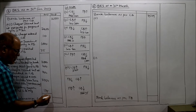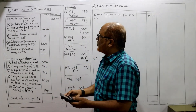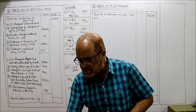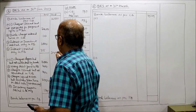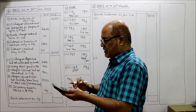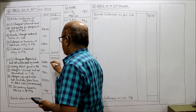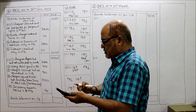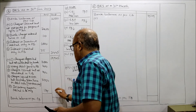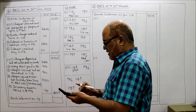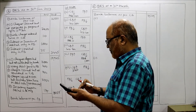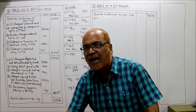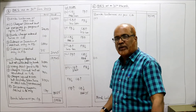Now we total up all items. Additions: 2400 plus 10 plus 1000 plus 35 equals 3445. Add to cash book balance: 3445 plus 16,500 equals 19,945. Deductions: 3000 plus 400 plus 700 plus 3750 plus 175 equals 8025. Final calculation: 19,945 minus 8025 equals 11,920. That is the bank balance as per pass book — rupees 11,920.